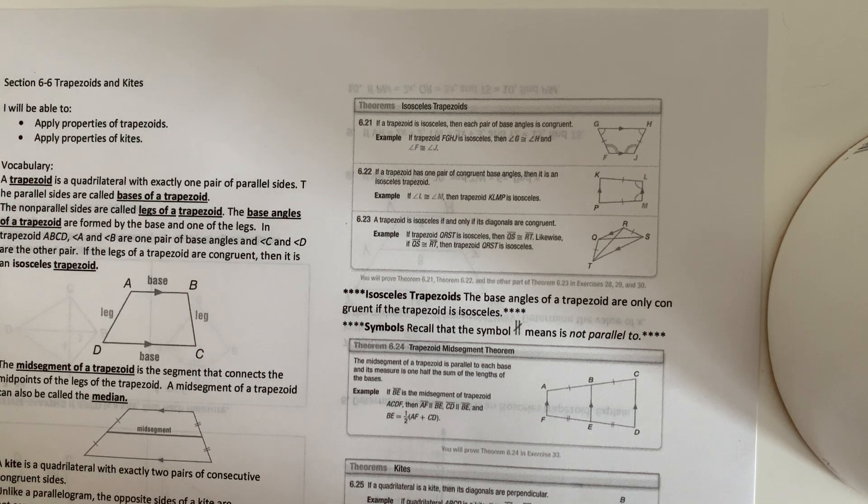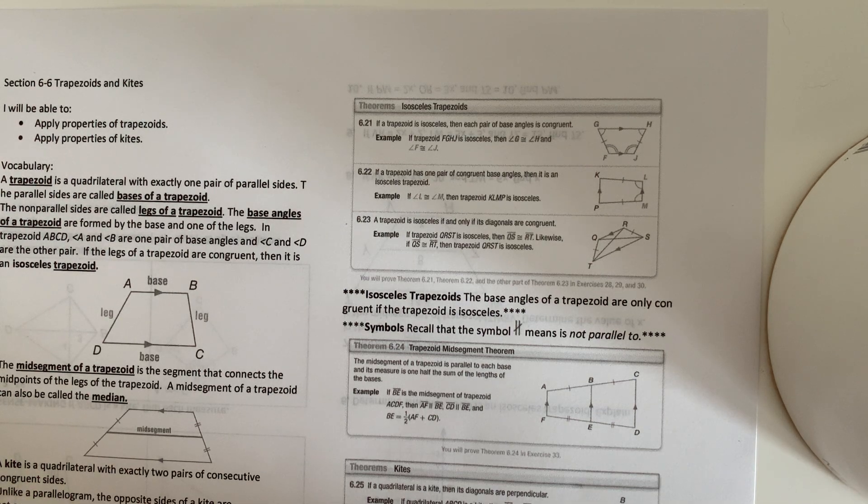So isosceles trapezoid. If a trapezoid is isosceles, then each pair of base angles is congruent. If a trapezoid has one pair of congruent base angles, then it is an isosceles trapezoid.